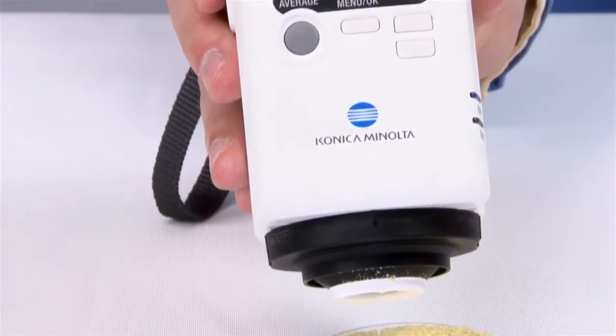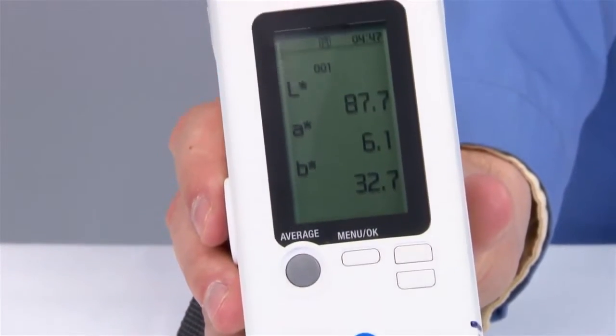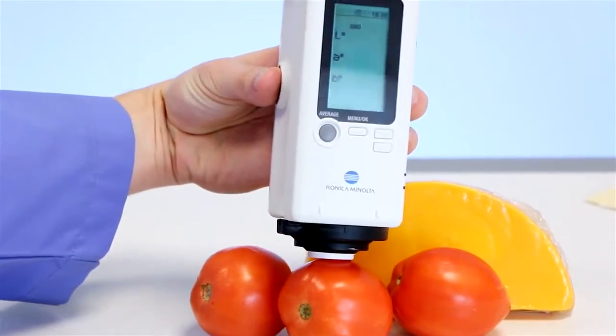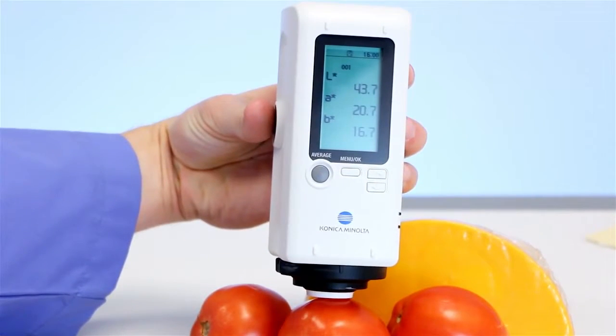With a protective glass cap, you can directly measure the color and whiteness of foods, raw materials, and wet samples in paste, solid, or powder form.